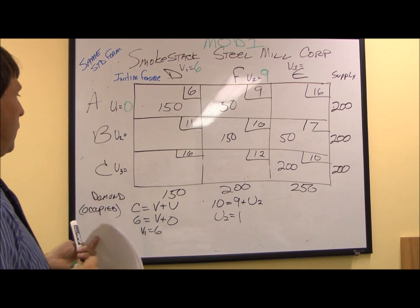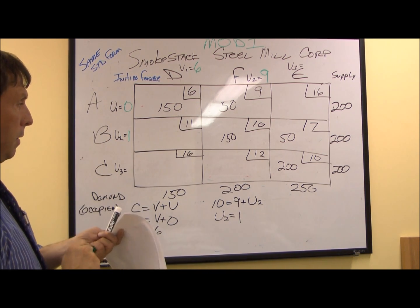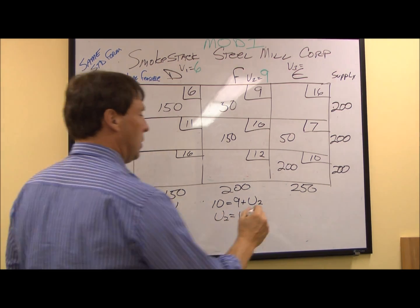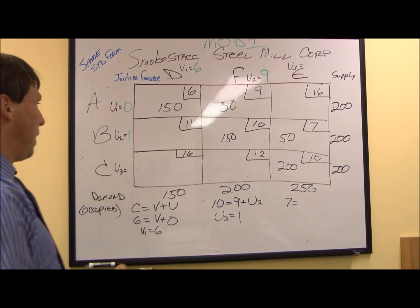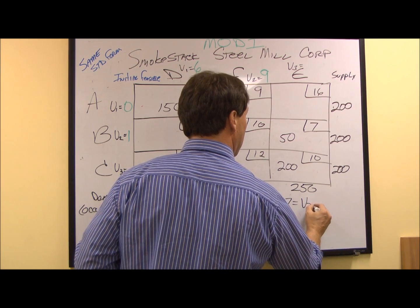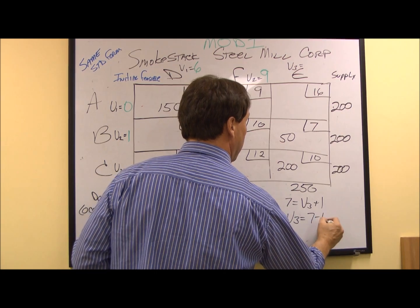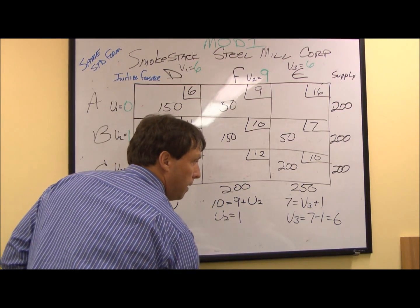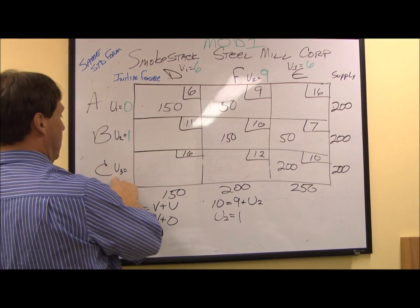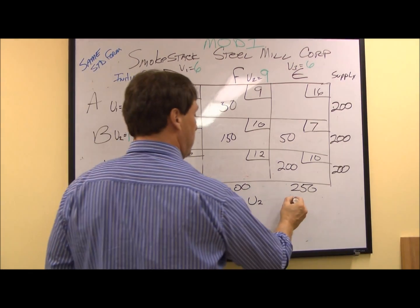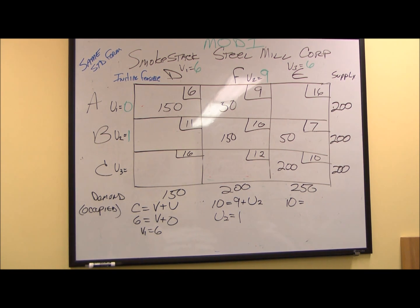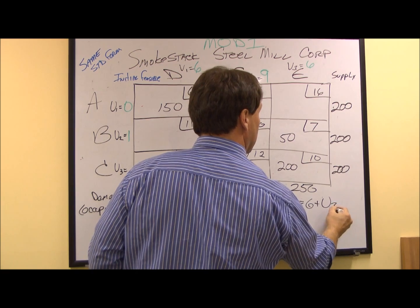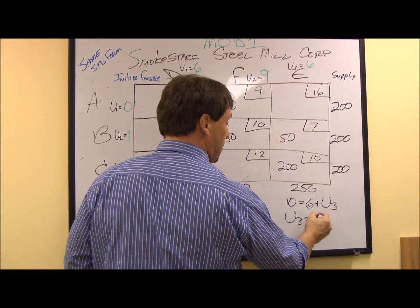So my index for U2 becomes one. Moving on, the next occupied cell is Birmingham to Elizabeth. We know our per unit shipping cost is seven, and U2 equals one, so V3 equals seven minus one, or six. And then finally, our last occupied cell is Cleveland to Elizabeth. We know that our per unit shipping cost is ten. We just calculated V3 as six, so we can solve for U3: U3 equals ten minus six, or four.